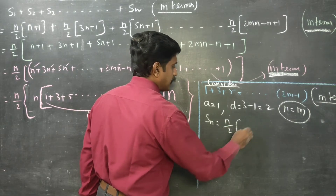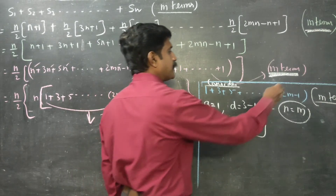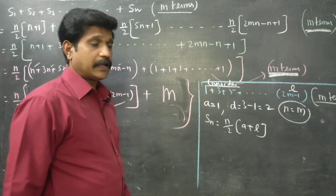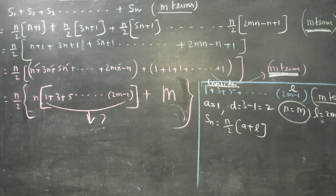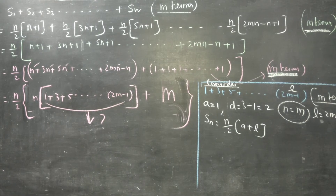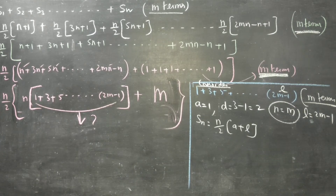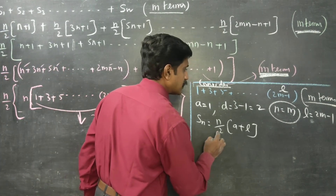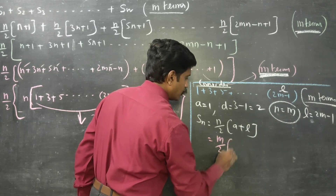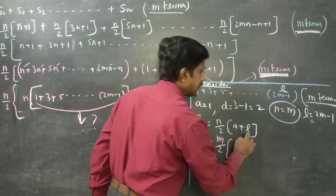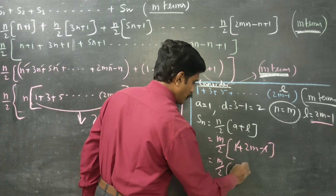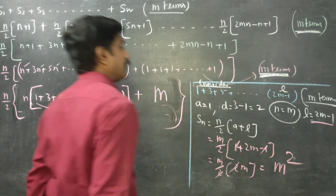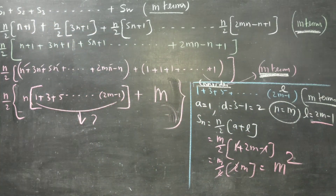A is equal to 1, d is equal to 2, number of terms is m. Using the S formula as n by 2 into a plus L: N is m, a is 1, and L is 2m minus 1. So the sum equals m by 2 into 1 plus 2m minus 1. The plus 1 and minus 1 cancel, giving m by 2 into 2m, so the answer is M squared.